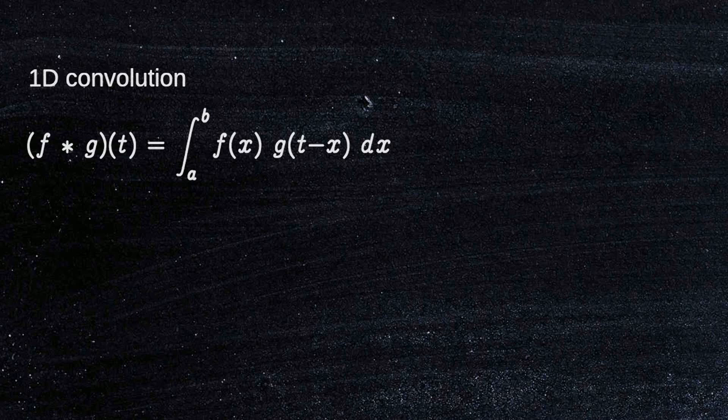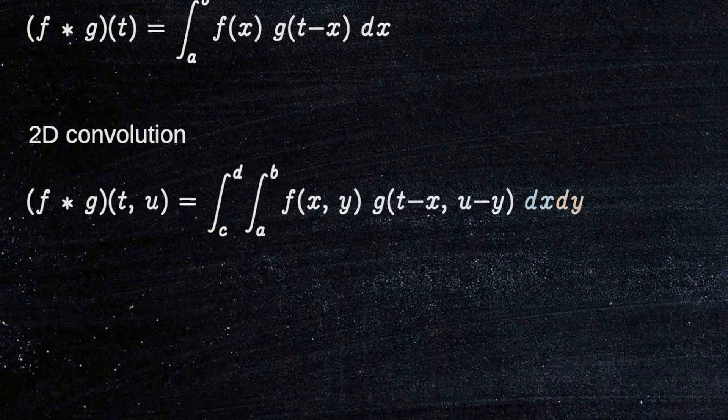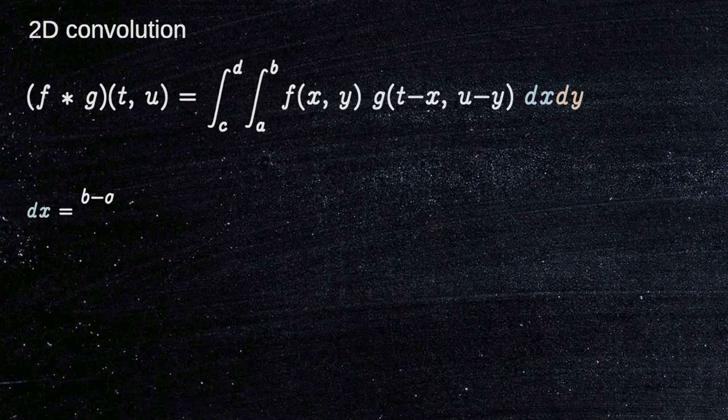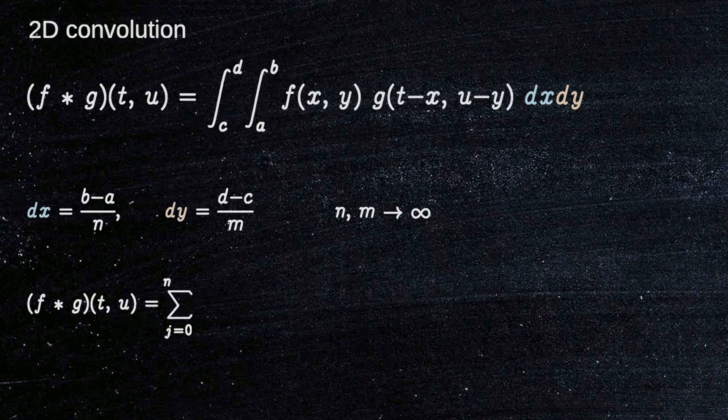So far what we have seen is the convolution of two functions of one variable. For example, the convolution of two functions of two variables is defined below. Let's say n and m are very large values. So we can rewrite this double integral as a double sum in the following way.